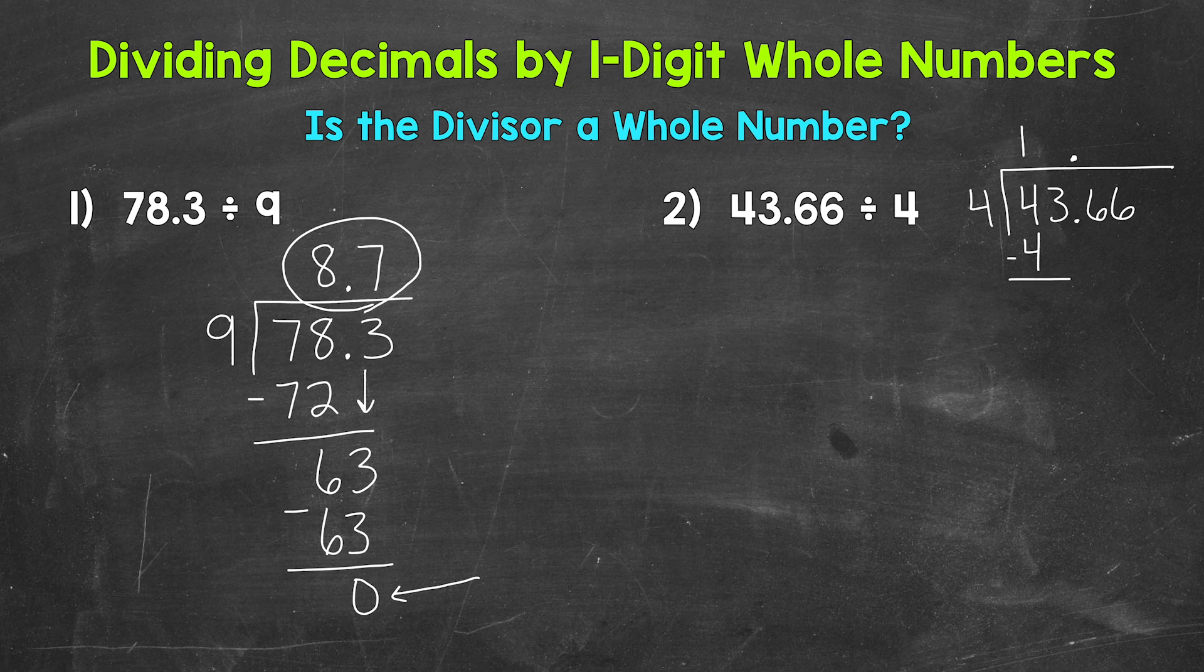Subtract. 4 minus 4? 0. Now we bring down. So we have 3. And we repeat. So we go back to divide. 3 divided by 4. How many whole groups of 4 in 3? Well, we can't do that. So we need a 0.